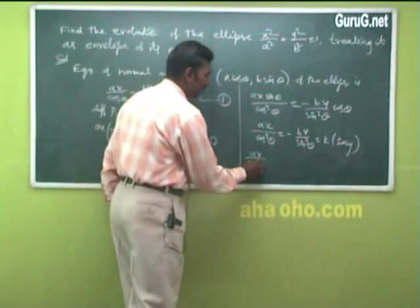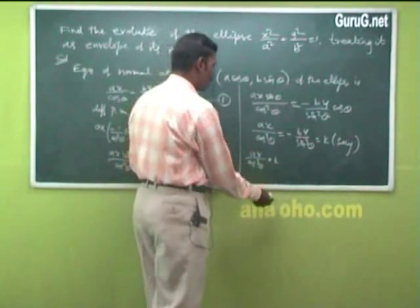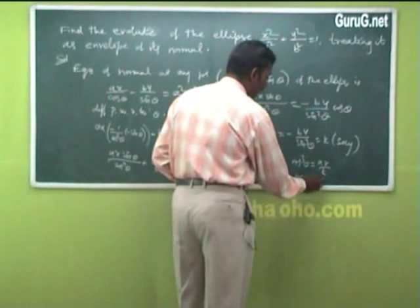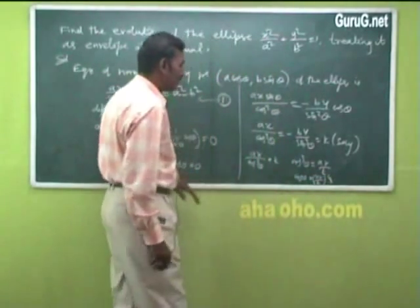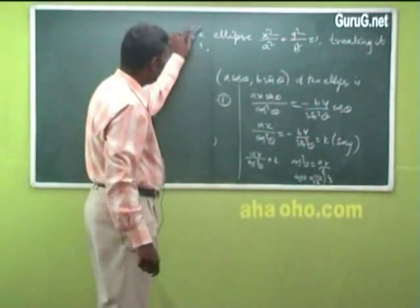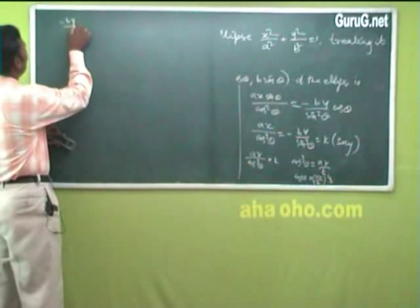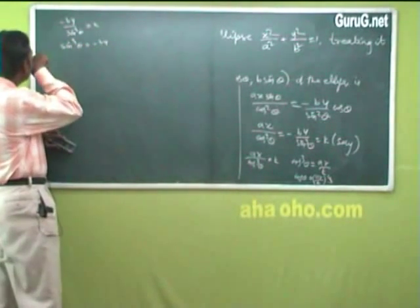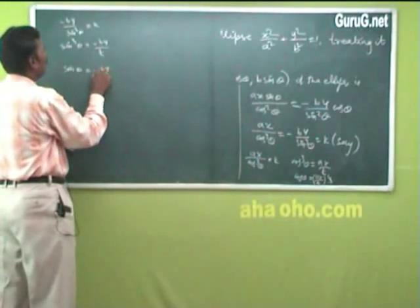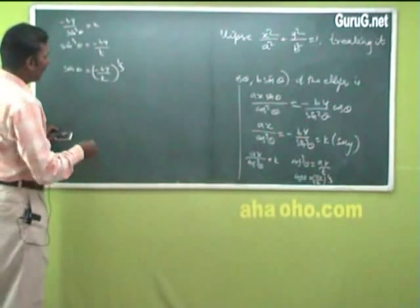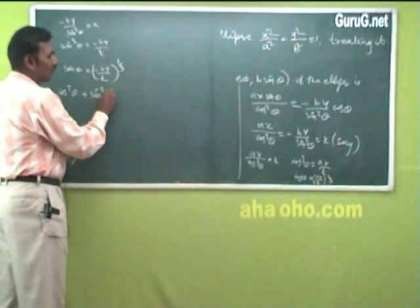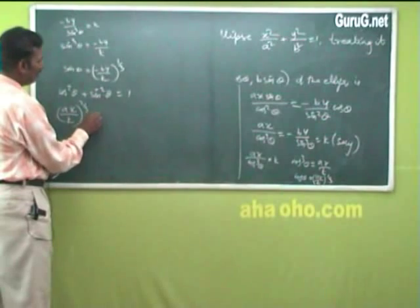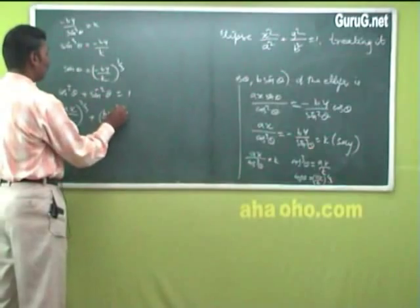Differentiating: ax·sinθ/cos²θ + by·cosθ/sin²θ = 0, which gives ax/cos³θ = -by/sin³θ = K. Taking first and last: cos³θ = ax/K, so cosθ = (ax/K)^(1/3). Similarly, sin³θ = -by/K, so sinθ = (-by/K)^(1/3).